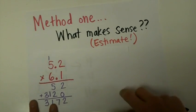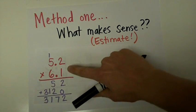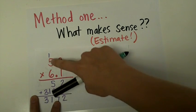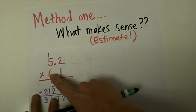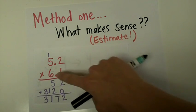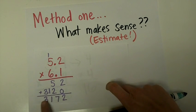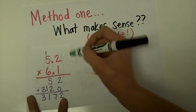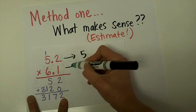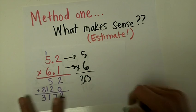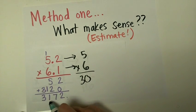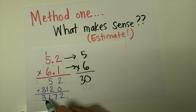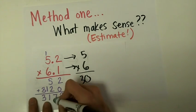Let's do one more problem using estimation. I did 5 and 2 tenths times 6 and 1 tenths like normal: 1 times 2 gave me 2, 5 times 1 gave me 5, put my placeholder 0. Then 6 times 2 makes 12 — put the 2 down and carry the 1. 6 times 5 is 30, plus 1 made 32. Then I add it all up. Now I need to figure out where to put my decimal. 5 and 2 tenths rounds to 5, and 6 and 1 tenths is about 6. 5 times 6 should give an answer close to 30, so putting the decimal here gives 31 and 72 hundredths — that's the place that makes sense.